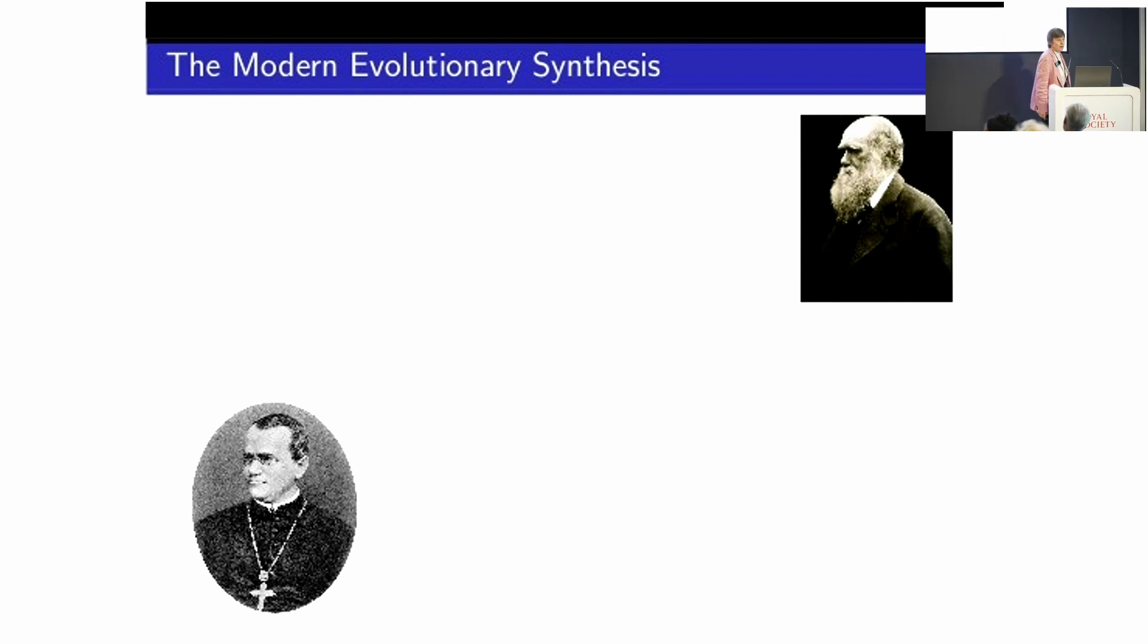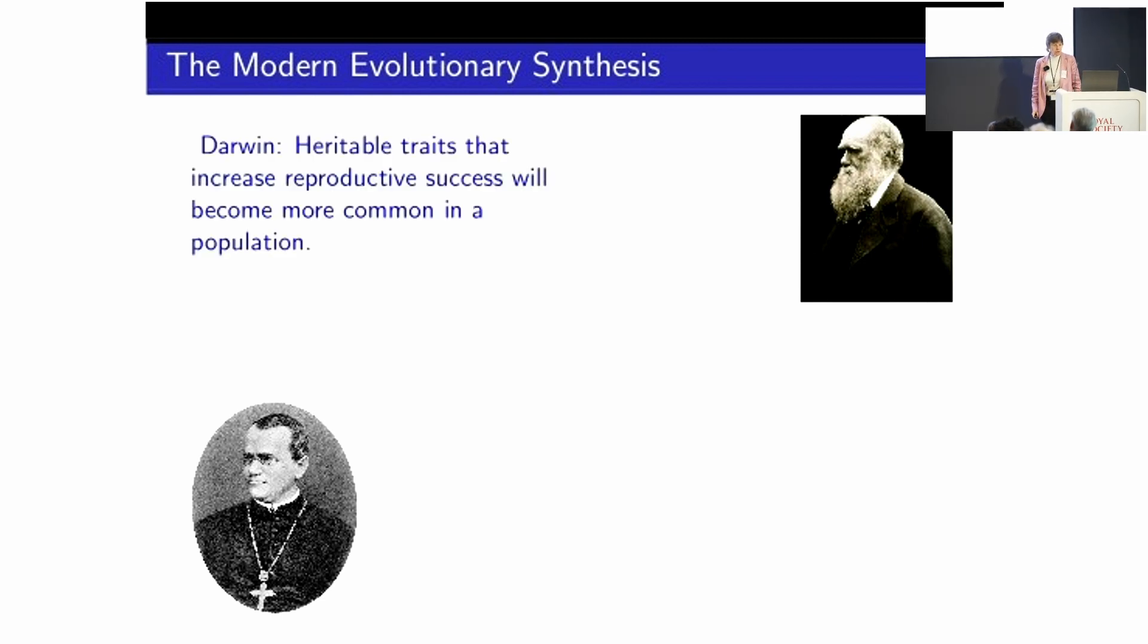So mathematical population genetics finds its origins in what we call the modern evolutionary synthesis. And that was the period when the theory of on the one hand Darwin, on the other hand Mendel, were united into a common theory. So Darwin tells us that heritable traits that increase reproductive success will become more common in a population. And in order for that to work, you need variation in the population, because if everyone's the same, nothing's going to change. And offspring must be similar to parents.